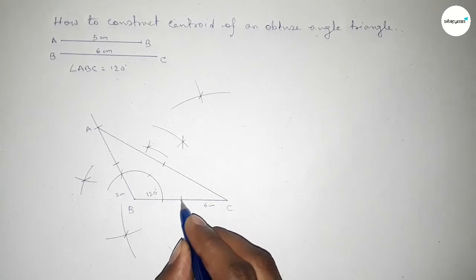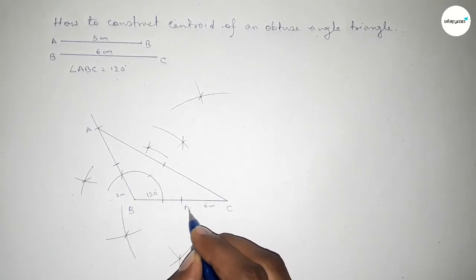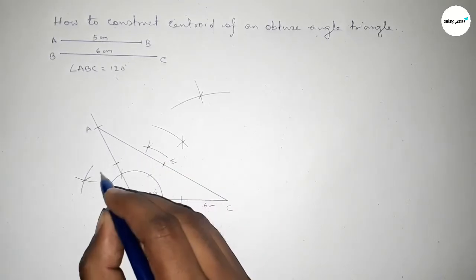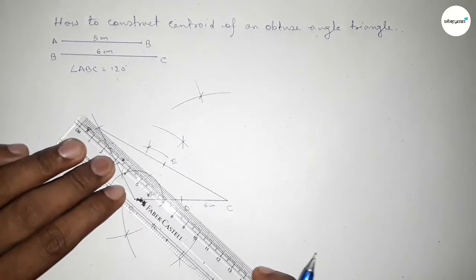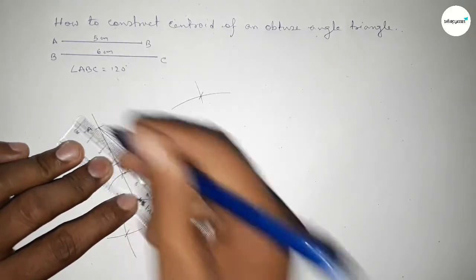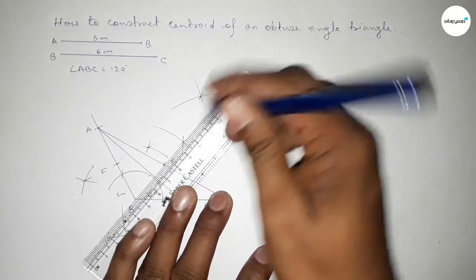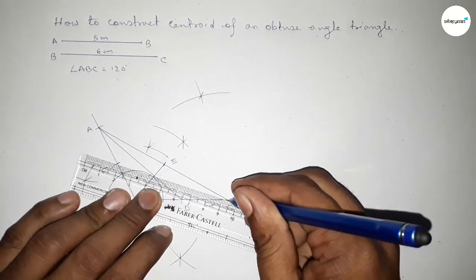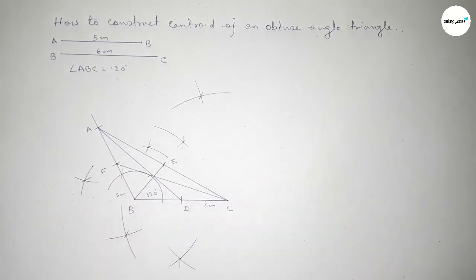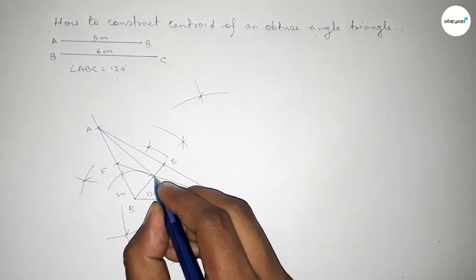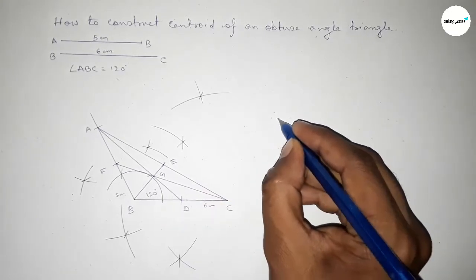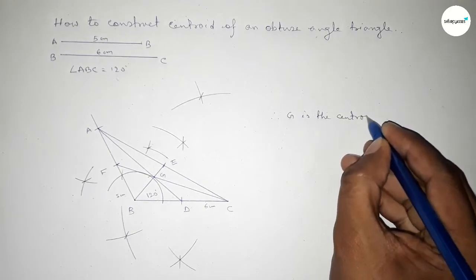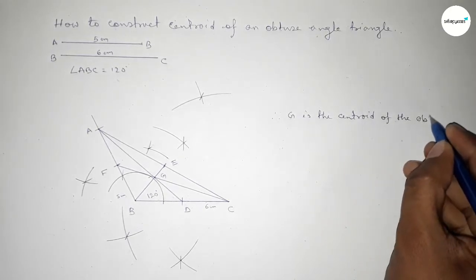This midpoint of BC is labeled point D, the midpoint of AC is labeled point E, and the midpoint of AB is labeled point F. Now joining median AD, then median BE, then median CF. The three medians intersect at a single point, labeled G. Therefore, G is the centroid of the obtuse angle triangle ABC.